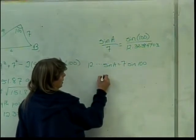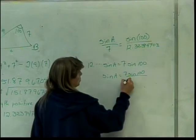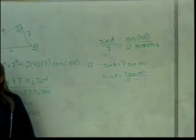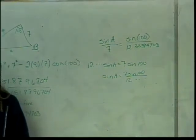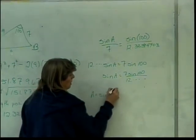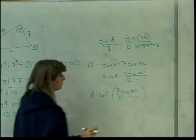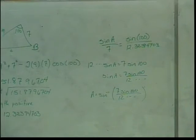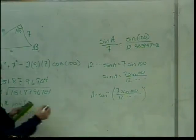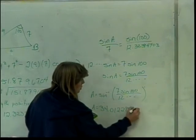And when I divide, I'll get the sine of A is equal to 7 sine of 100 divided by 12 point all that stuff. All right, that's not A though, is it? No, it's not. What do I need to do to get A? Inverse sine. So A is going to be the inverse sine of 7 times the sine of 100 divided by 12 point and all that stuff. So this tells me that A is 34.01228522 degrees.